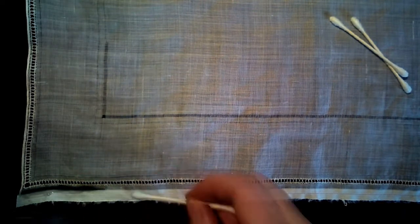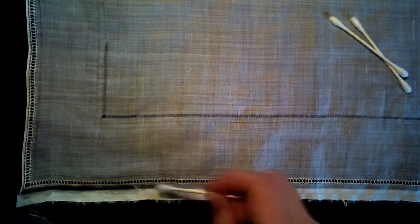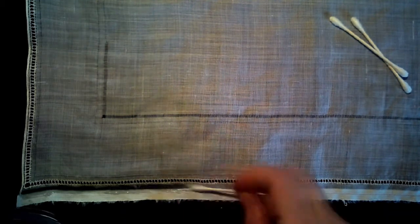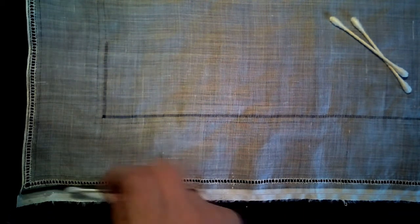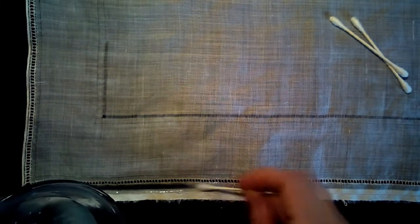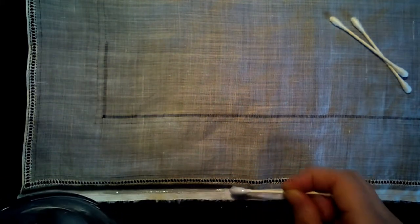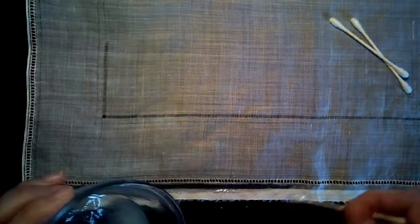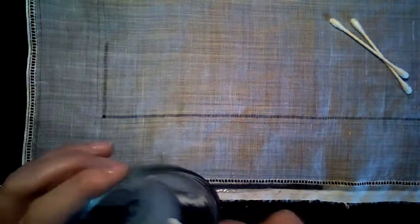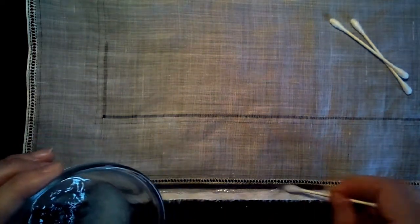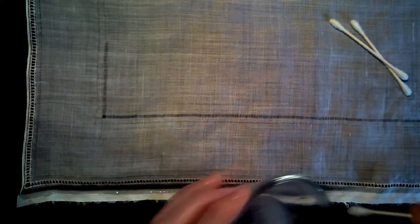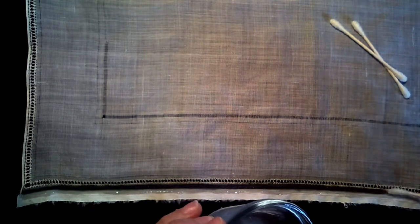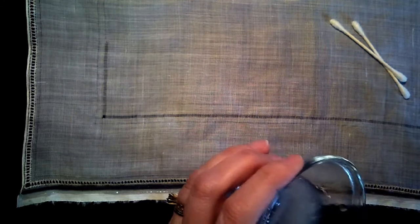I use a q-tip to apply the starch. I've used in the past some of my husband's paint brushes. Unfortunately, occasionally they are not washed out as well as I would have liked and it was kind of a little disturbing to have my linen turn purple. So I've gone to using q-tips because I know that they're always clean.